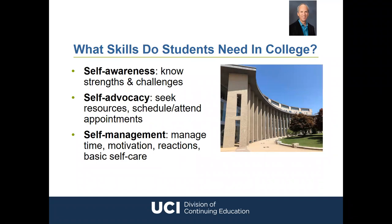There are three main categories of college readiness skills. First is self-awareness — knowing yourself: knowing what you're good at and what's hard for you. Second is self-advocacy — stepping up and getting resources, asking for help, speaking up, and setting things up on your own. Third is self-management — managing all the different aspects of your life: your time, your money, your reactions to events.